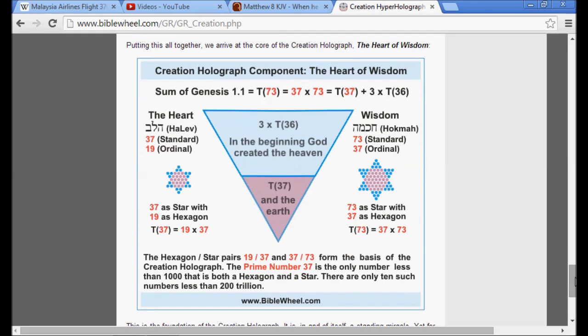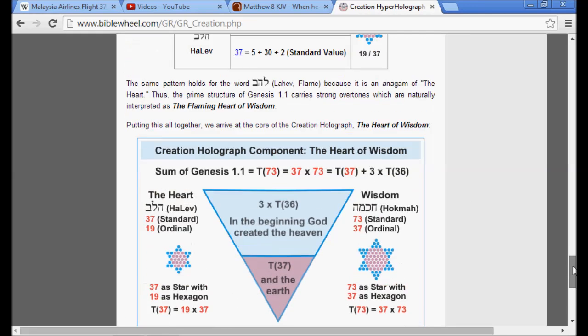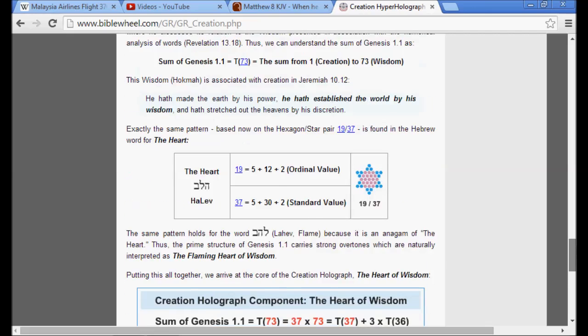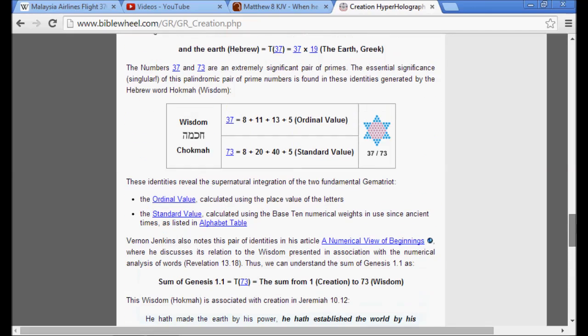In the beginning, God created the heavens and the earth. There's a hexagon and a star, which is the cube.